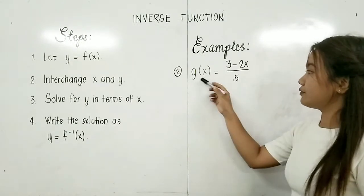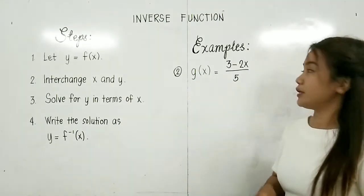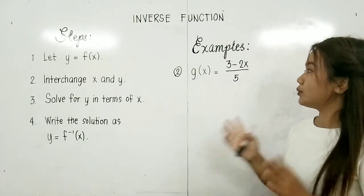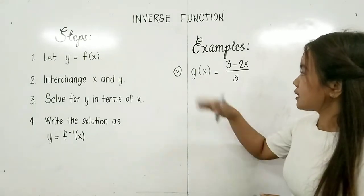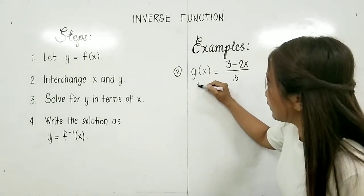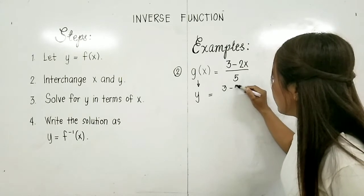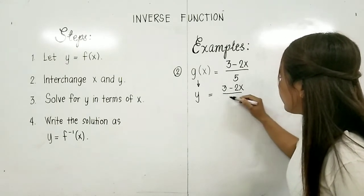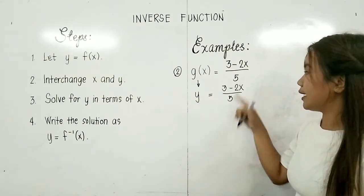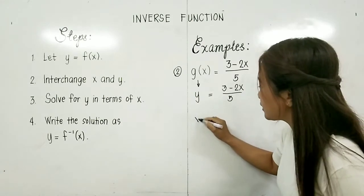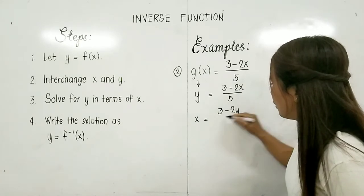Next example: g(x) = (3 − 2x) / 5. This is an example of a rational function with a numerator and a denominator. We will get the inverse of g(x). Step 1: let y equal to g(x), so y = (3 − 2x) / 5. Step 2: interchange the variables y and x, so we have x = (3 − 2y) / 5.